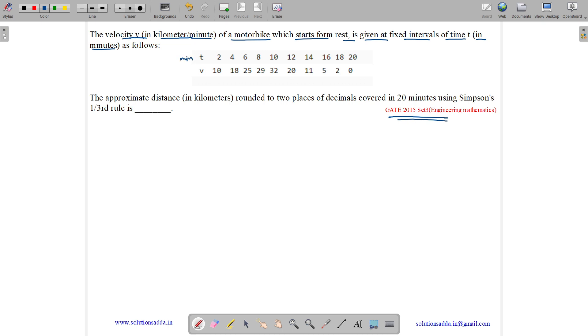So we have time in minutes and we have velocity in km per minute. And we have been given at fixed time intervals what is the velocity. The approximate distance in km rounded to 2 decimal places covered in 20 minutes using the Simpson one-third rule.